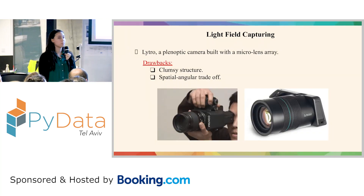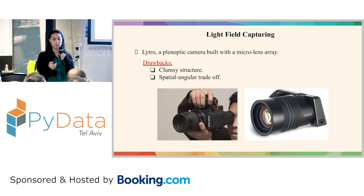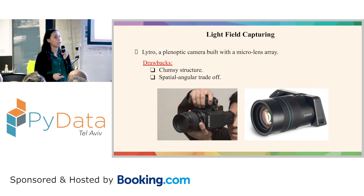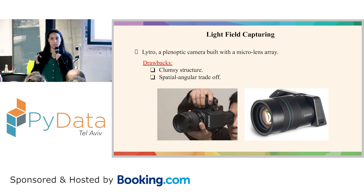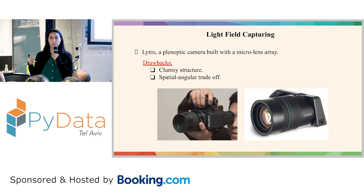A light field can be captured by a light field camera — a camera with a micro lens array that captures multiple light rays. It has two major drawbacks: first, it's a bit clumsy, about this size; and second, there is a spatial and angular resolution trade-off, which I will talk about in a couple more slides.